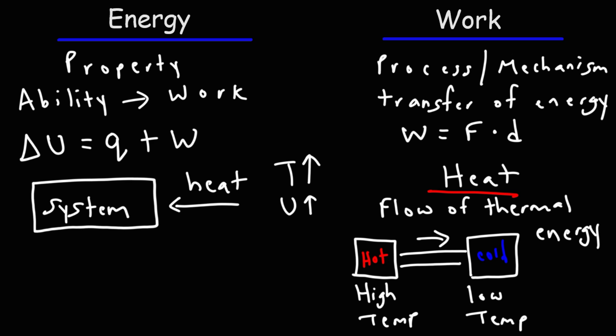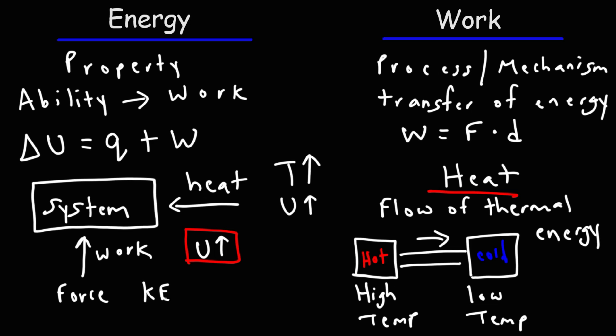The other way to increase the energy of a system is by means of a force. By means of a force, you can do positive work on a system or you could do negative work on it. As you do positive work on a system, its internal energy is going to increase. For instance, if you apply a force and cause the object to accelerate, because the velocity of the object is increasing, the kinetic energy of that object increases, and so its overall internal energy goes up.